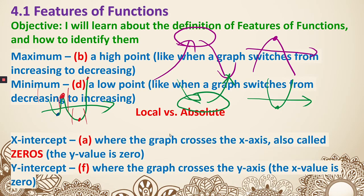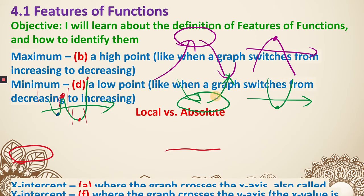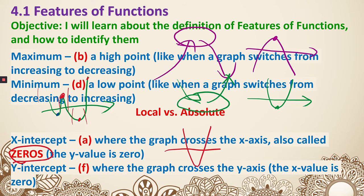Two more definitions: x-intercept and y-intercept. The x-intercept is also called a zero — we'll explore that more in the future — and it's where the graph crosses the x-axis. For the y-intercept, if we have both axes and a graph, the point where the graph crosses the y-axis is the y-intercept.